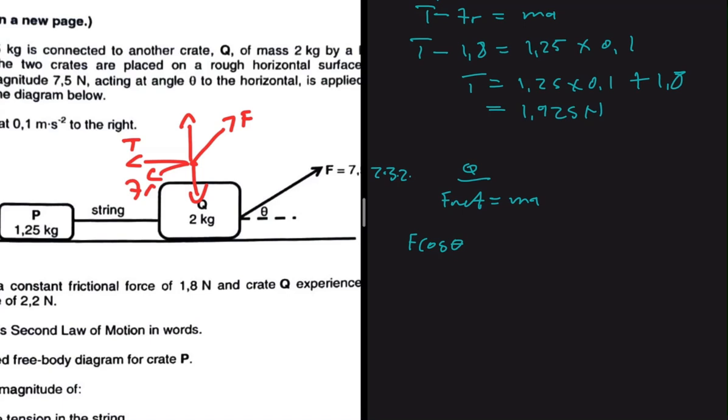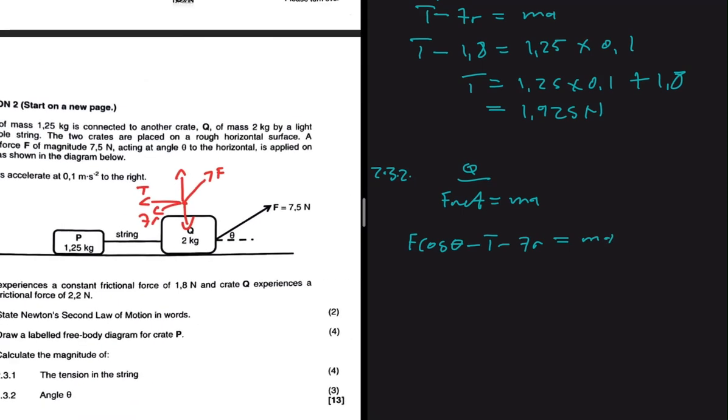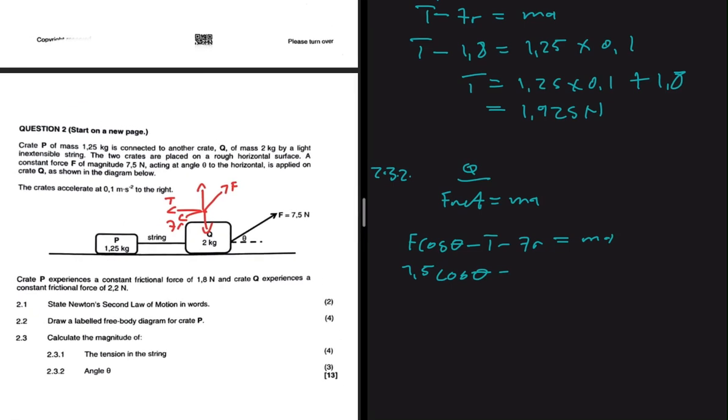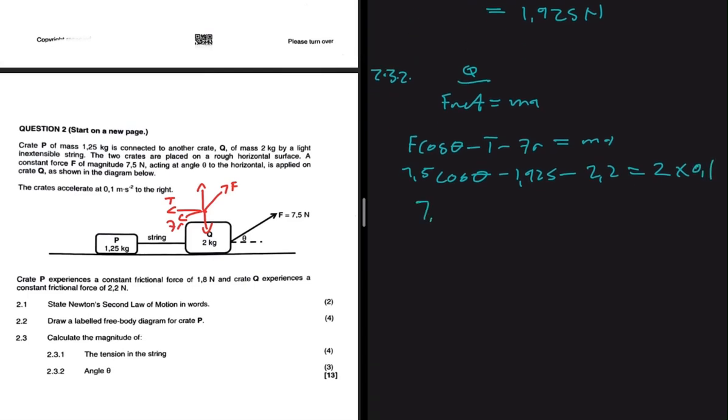Then we subtract all the smaller forces: minus tension minus friction equals ma. F is 7.5, so 7.5 cos theta. The tension we concluded in 2.3.1 is 1.925. The frictional force is given as 2.2, and this equals the mass of 2 kg multiplied by the acceleration which is 0.1.